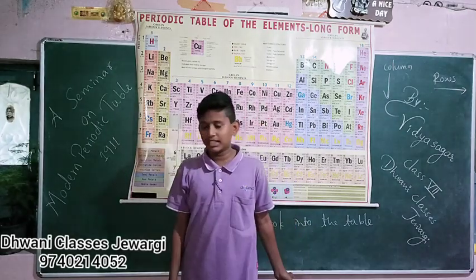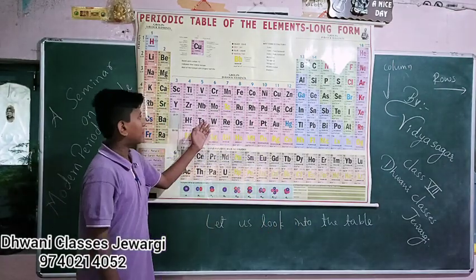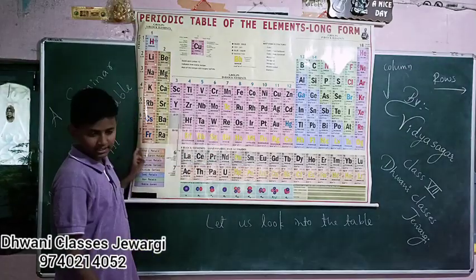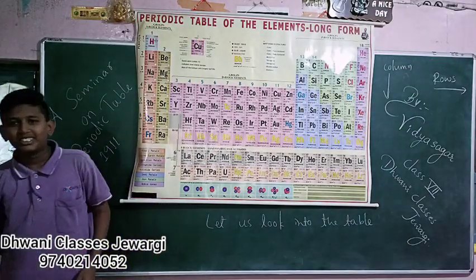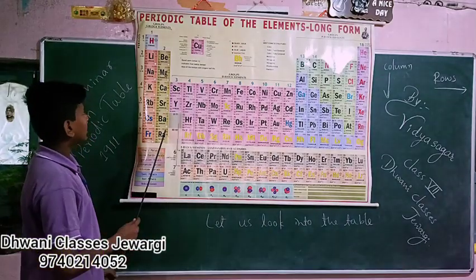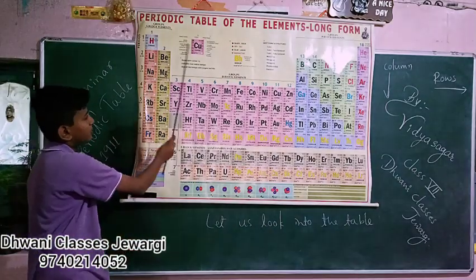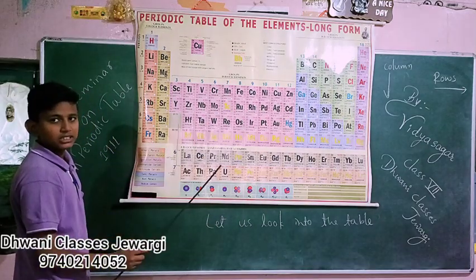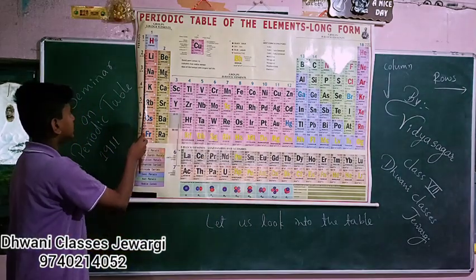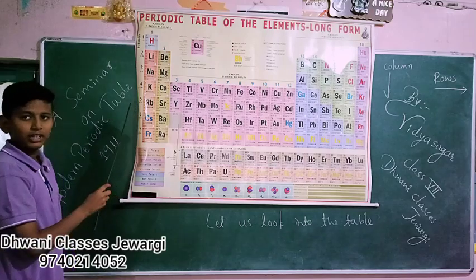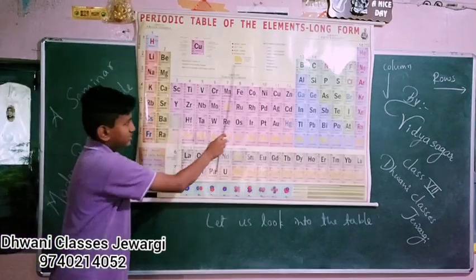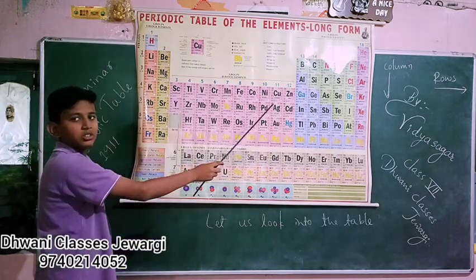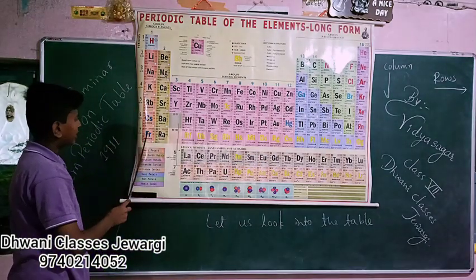Let us look at the table. It was proposed by Henry Moseley in the year 1911. The table contains 18 vertical columns, from 1 to 18. The table also contains 7 periods, which are called horizontal rows, from 1 to 7.